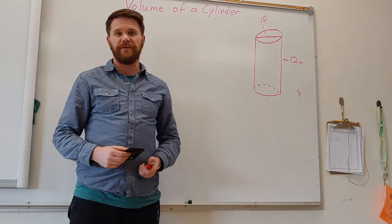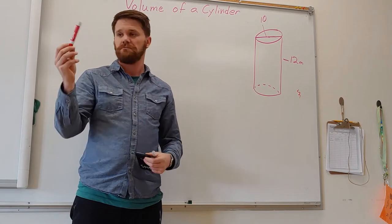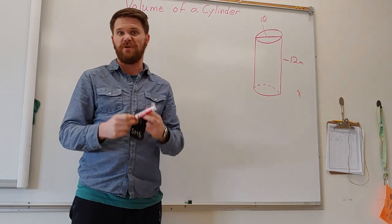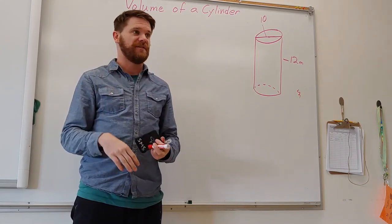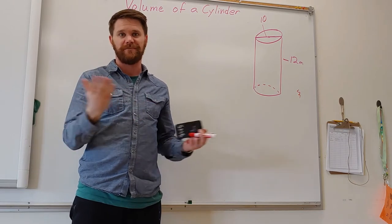All right, so next we're going to look at the volume of a cylinder. A cylinder is just something like this. A pop can would be a cylinder. Anything with a flat top, nice circular all the way down, flat bottom. That's a cylinder.